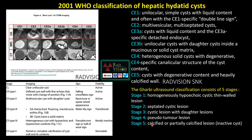The Gharbi ultrasound classification has five stages: Stage 1 is a well-defined hypoechoic cystic lesion; Stage 2 is a septated cystic lesion; Stage 3 is a cystic lesion with daughter lesions; Stage 4 is a pseudotumor-like lesion; and Stage 5 is a completely calcified inactive cyst. CL, CE1, and CE2 are considered active lesions. CE3 is transitional. CE4 is mostly inactive. CE5 is non-viable. These are the variable signs seen in hydatidosis at varying stages.